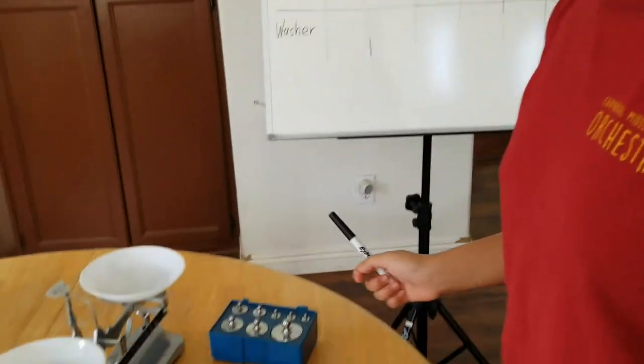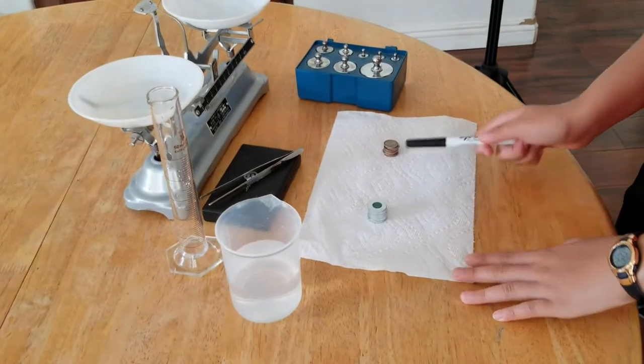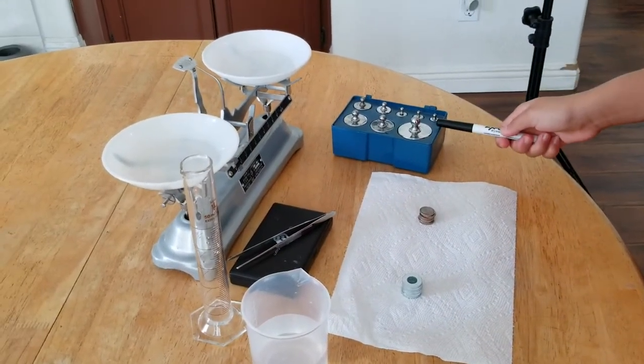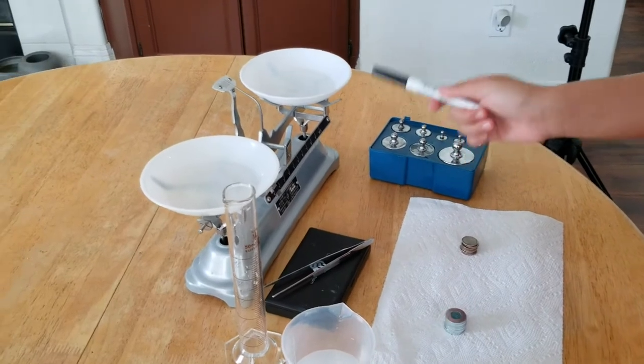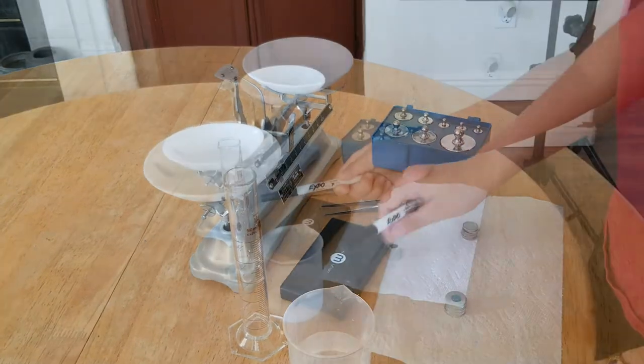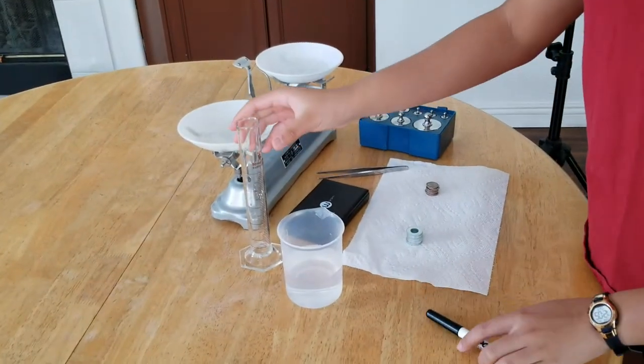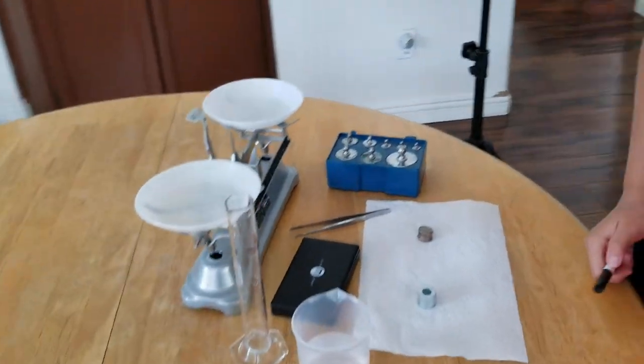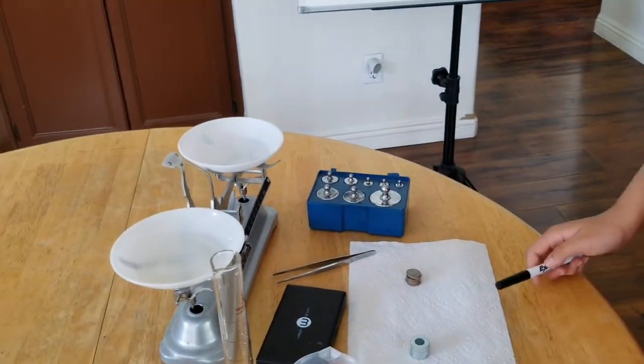Okay, so here's your lab. You need 10 dimes, 10 washers, weights, a scale, a balance scale if you have one. If you don't, you can use an electric scale. We have a graduated cylinder and some water in a beaker. It'll be easier to pour into.